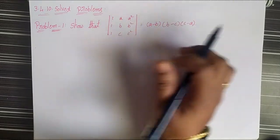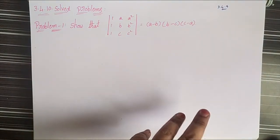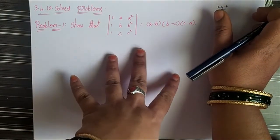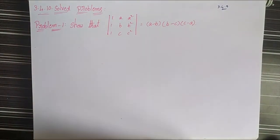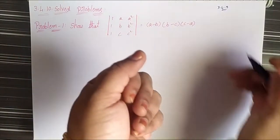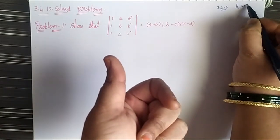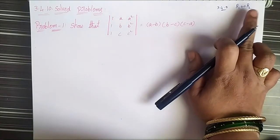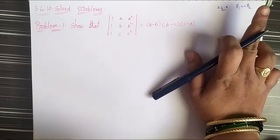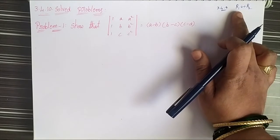In textbook 3.4.9, notations are placed that are used for solving the problems. From this problem onwards, all problems use these notations. If any two rows are interchanged, that is indicated as R1 interchange to R2, meaning R1 is interchanged to R2 and R2 is interchanged to R1.